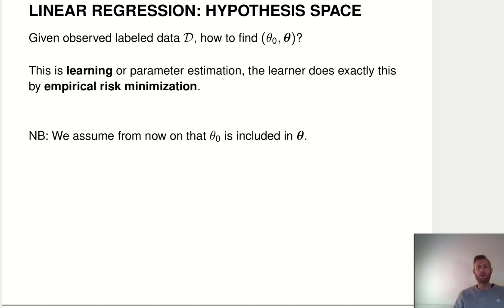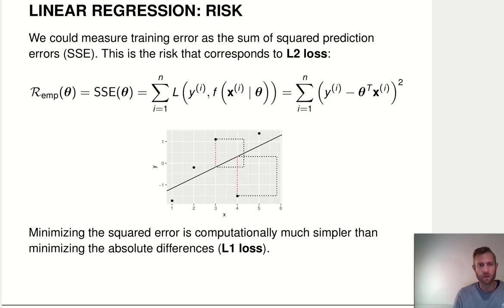Given that we have these observed labeled data, how do we find the optimal set of parameters? Well, we do that via empirical risk minimization. So we first have to define a loss function and then we try to minimize the average loss over a training dataset. That's just empirical risk minimization. So how do we do this?